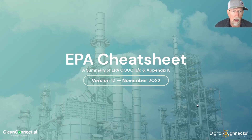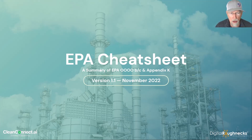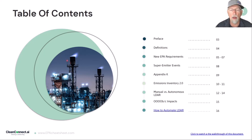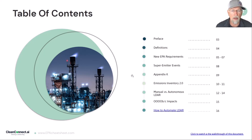Hey everybody, this is Mark Smith from CleanConnect.ai and also host of Digital Roughnecks. Today we're going to go over my EPA cheat sheet, which is a summary of the new regulations that just came out — the new draft in November of 2022 called EPA Quad OBC and Appendix K. This is an overall table of contents. If you are watching this at epacheatsheet.com, there's a button below where you can get the cheat sheet, or you can head over to epacheatsheet.com and get your own copy of this 16-page cheat sheet.